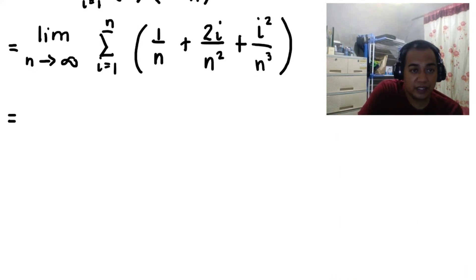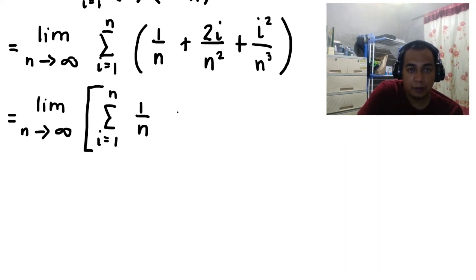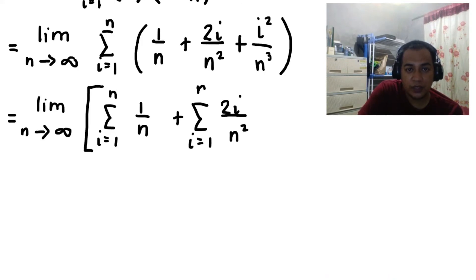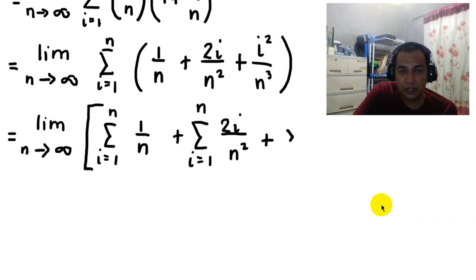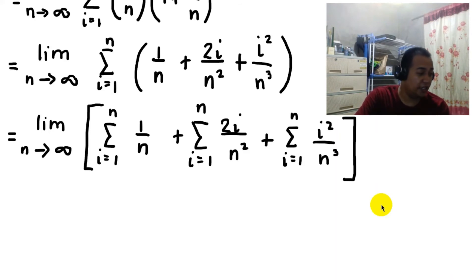Since the summation can be distributed over individual terms, we can write this as the limit as n approaches infinity of: the summation of 1 over n (i from 1 to n), plus the summation of 2i over n squared (i from 1 to n), plus the summation of i squared over n cubed (i from 1 to n). We will now apply our summation formulas from Section 11.2.